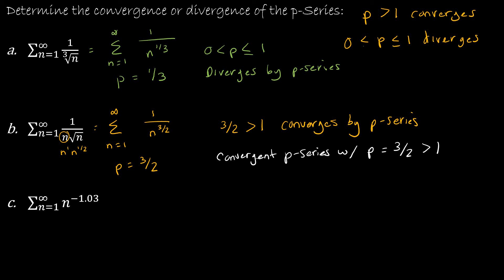The last example is n to the negative 1 third. So if I'm thinking about this as from 1 to infinity of 1 over n to the 1.03, that's positive. So I'm writing it as the denominator now and getting rid of that negative.